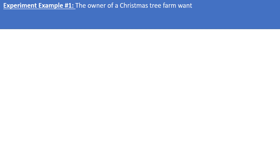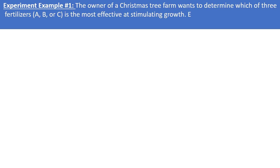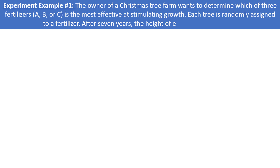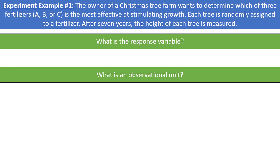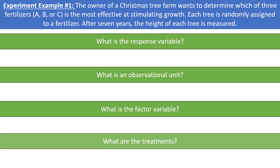Let's look at a few examples. The owner of a Christmas tree farm wants to determine which of three fertilizers — A, B, or C — is the most effective at stimulating growth. Each tree is randomly assigned to a fertilizer. After seven years, the height of each tree is measured. Take a minute to pause the video and see if you can correctly identify the response variable, the observational unit, the factor variable, and the treatments.